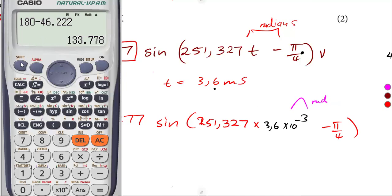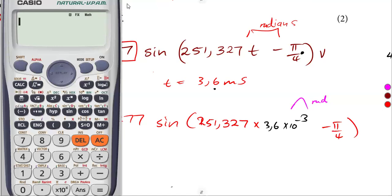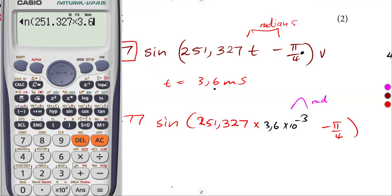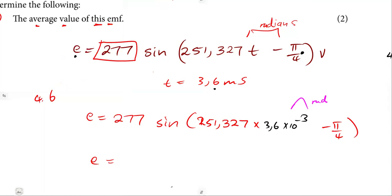To set the calculator to radians: press shift, go to mode — which is setup — then press 4 for radians. The calculator now shows R on top, meaning it is in radians. So that is: 277 times sine of 251,327 times 3.6 times 10 to the exponent of negative 3, then subtract pi over 4. Closing the bracket gives us 32.990 — so the instantaneous value is approximately 32.99 volts.